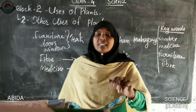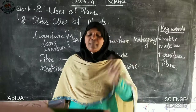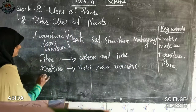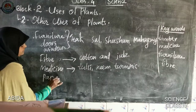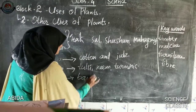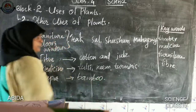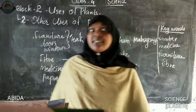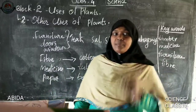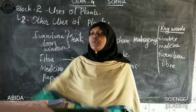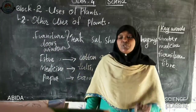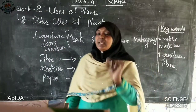Which plant is used to make paper? Bamboo. Bamboo is the tallest grass and is used to make paper.